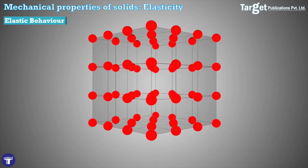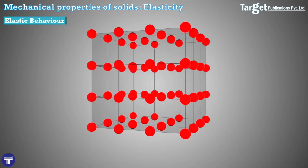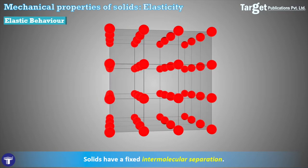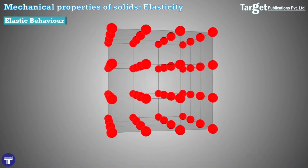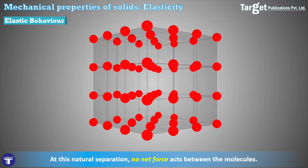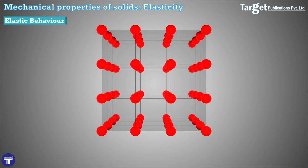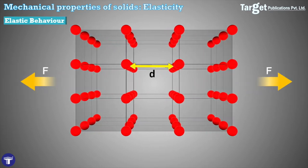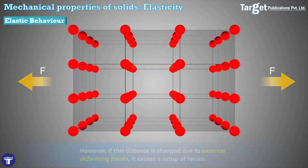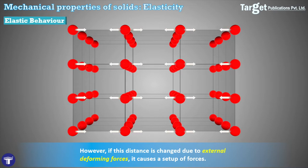To study the elastic behavior of solids, we must first understand what happens inside a solid when an external force is applied. Inside solids, molecules have a fixed intermolecular separation — this is the natural separation at which no net force acts between the molecules. If we apply an external deforming force that tries to change the distance between molecules — either pulling them apart or pushing them together — this sets up internal forces inside the solid.